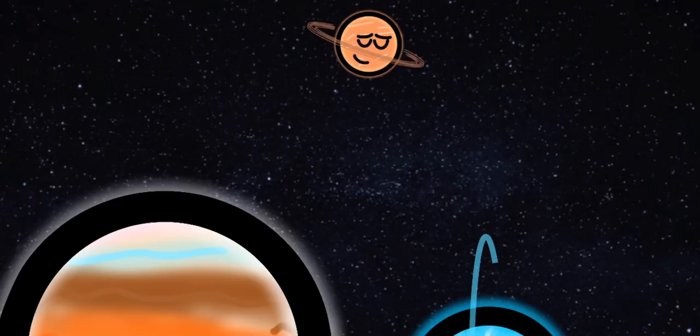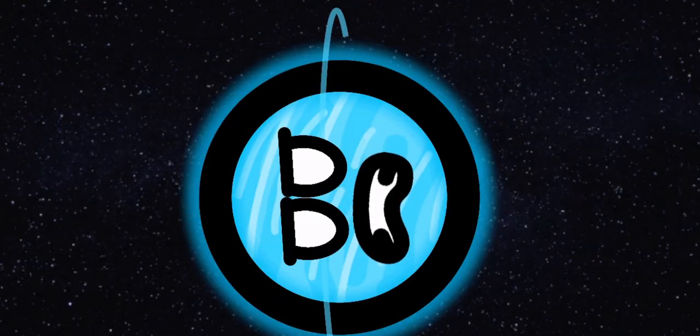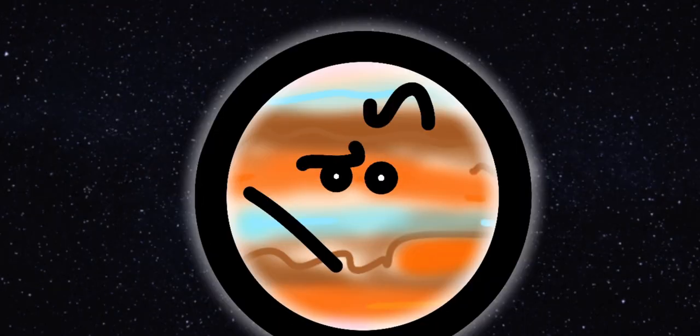Here we have Jupiter. Saturn has those amazing rings. I have rings. Neptune has rings. You have rings.